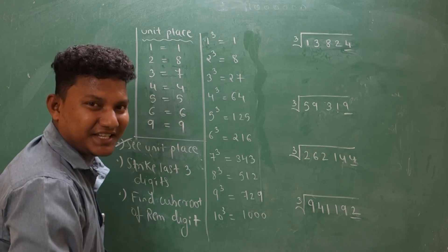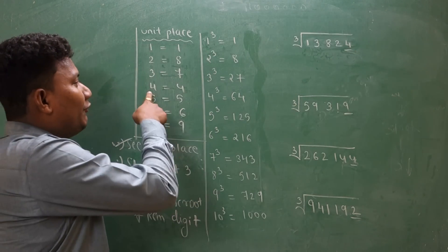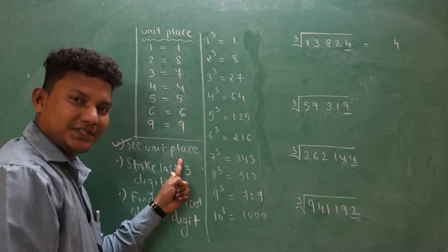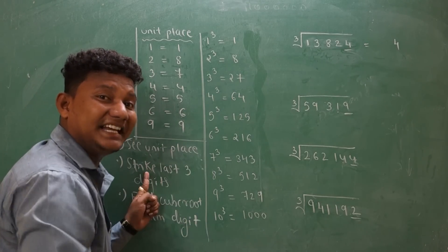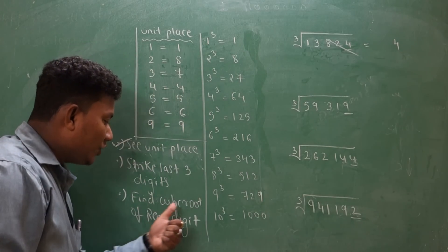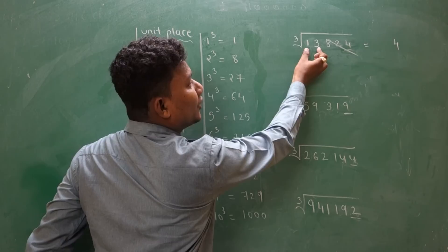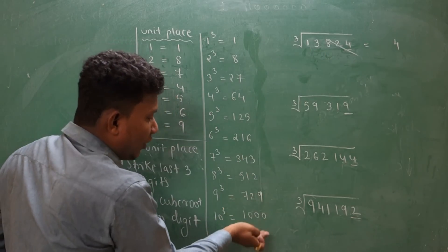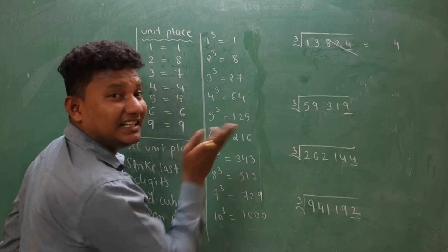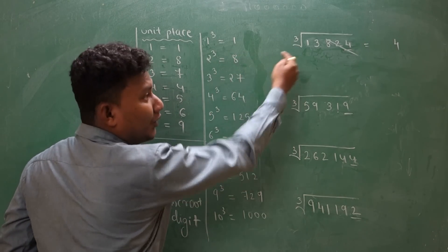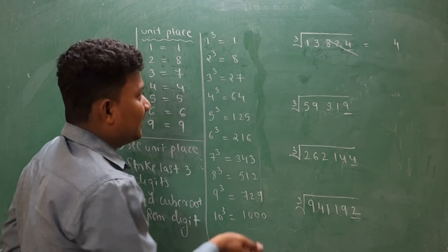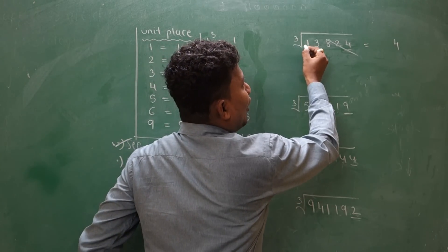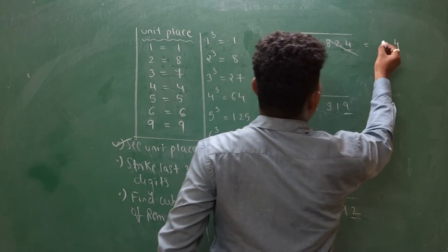Now see how to find the answer in just a fraction of a second. What is the unit place here? It is 4. For 4, the answer will be 4 — write the 4. Step number 2: strike the last 3 digits. Then find the cube root of the remaining digit — we have to find the cube root of 13, either 13 or less than 13, not more than 13. The value 13 lies between 8 and 27, and less than 13 is 8. The cube root of 8 is 2. So the cube root of 13824 is 24.